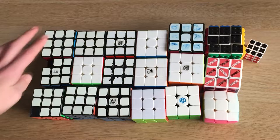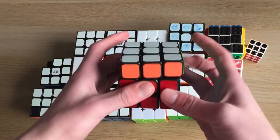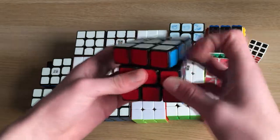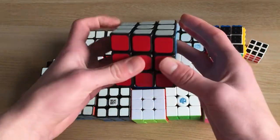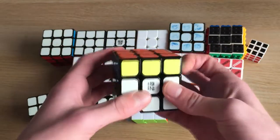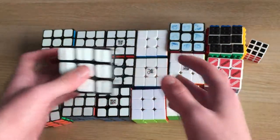Here are my 3x3s. So this is my first ever 3x3, just a store-bought one from the works. Turns pretty badly, but it's okay for my first cube. Then we have the QiYi Sail, which was part of my Siamese Cube and was also my first speed cube.